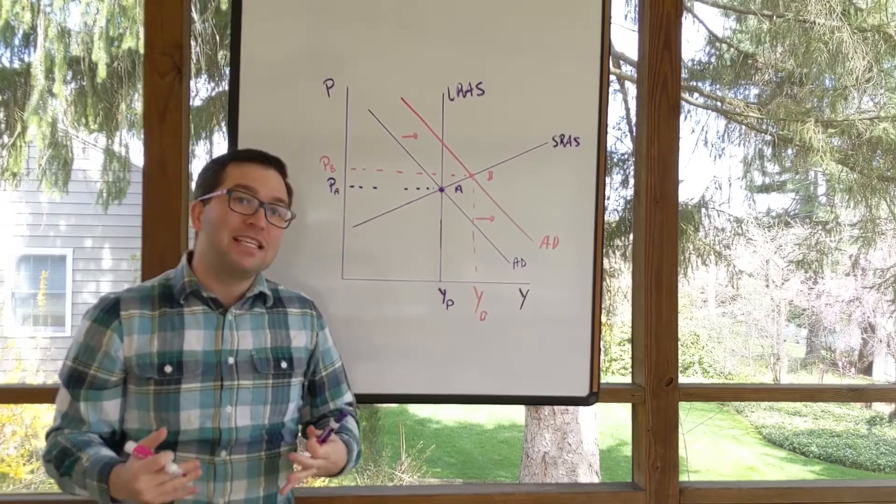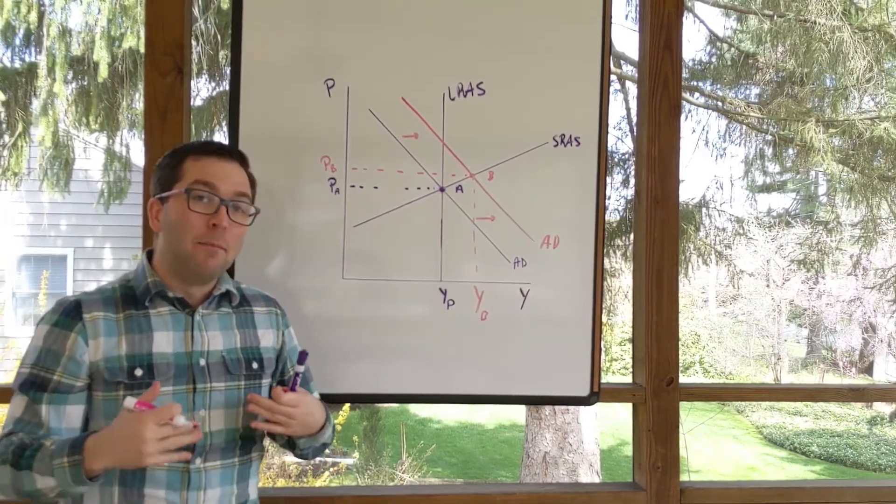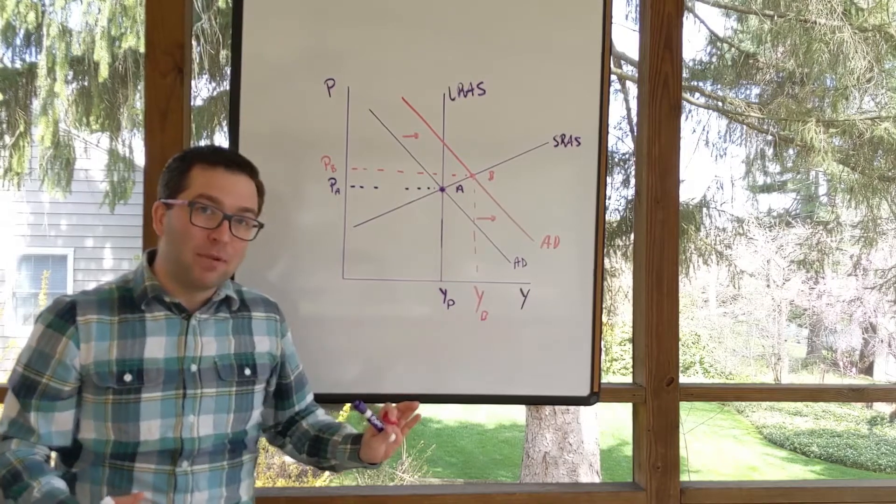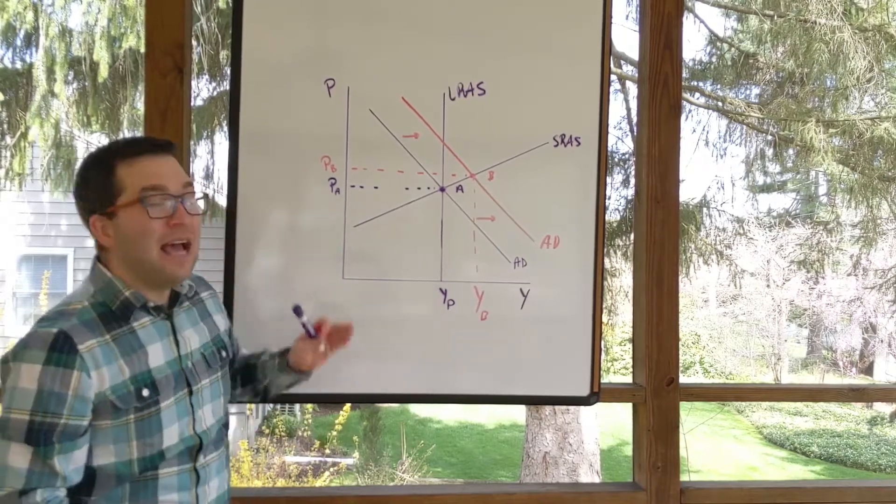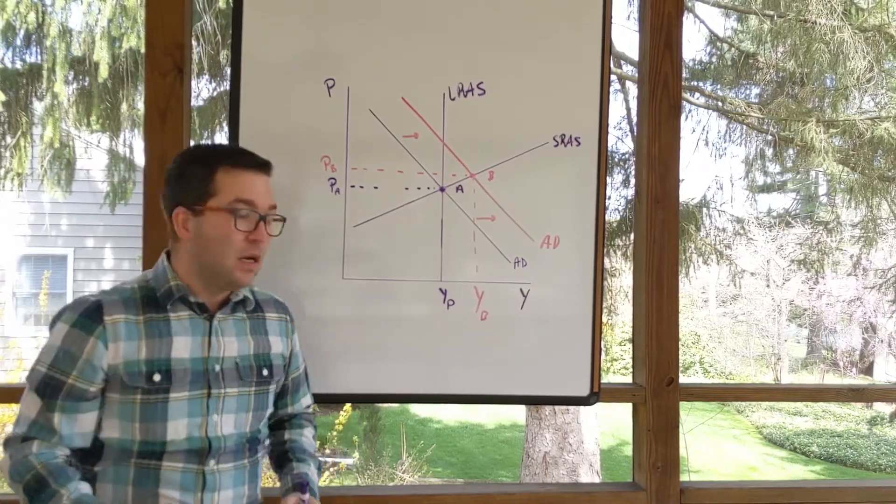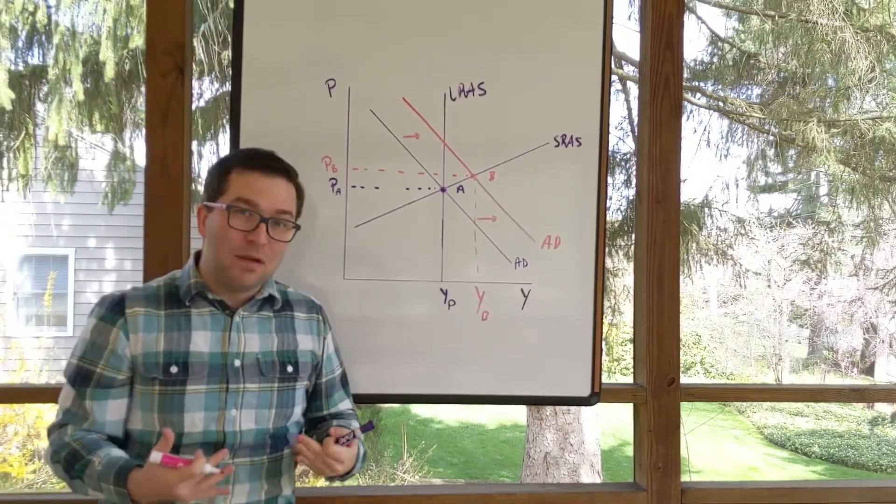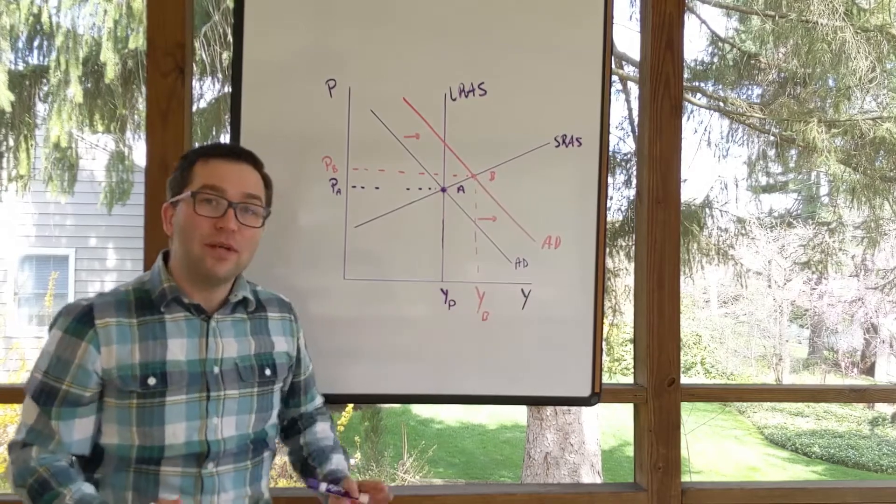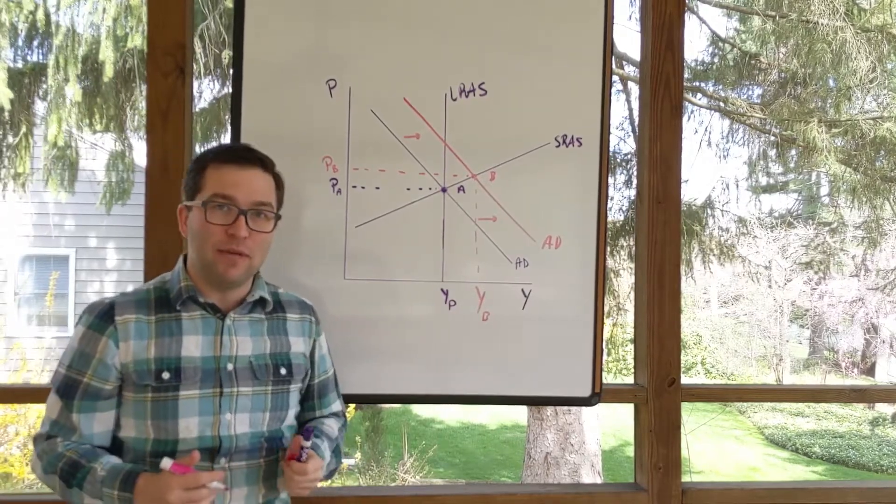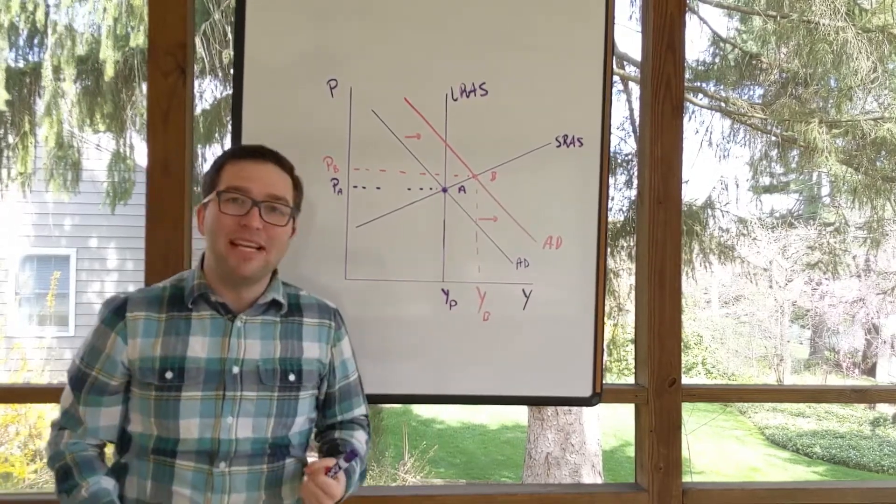Remember, the Fed has a dual mandate. They have to both get maximum employment and they have to stabilize prices. What that means is the Fed is trying to get the prices back to stable and they're also trying to get GDP back to potential GDP. Well, how could that happen here?